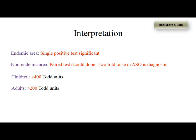In an endemic area, a single positive test above the normal range should be considered diagnostic of acute rheumatic fever. Whereas in non-endemic areas, we require two samples taken at an interval of 2 to 3 weeks and must demonstrate a two-fold rise in ASO titers for diagnosis. For children, the cut-off value of ASO titers for diagnosis of rheumatic fever is kept a little bit higher than the titers for adults.